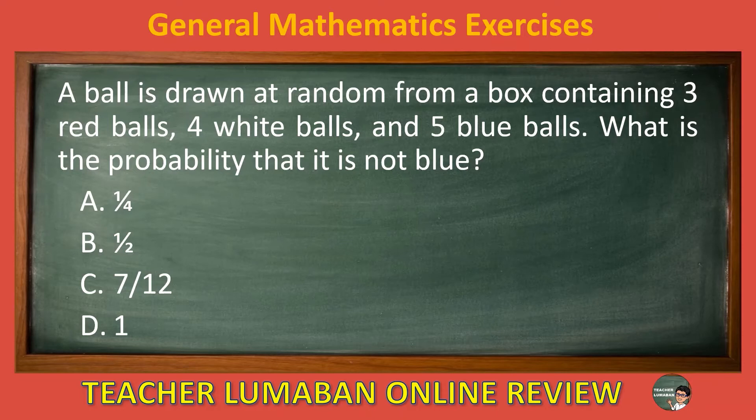The correct answer is letter C: 7/12. A ball is drawn at random from a box containing 3 red balls, 4 white balls, and 5 blue balls. The probability that it is not blue is 7/12.